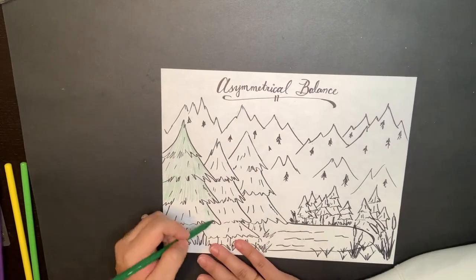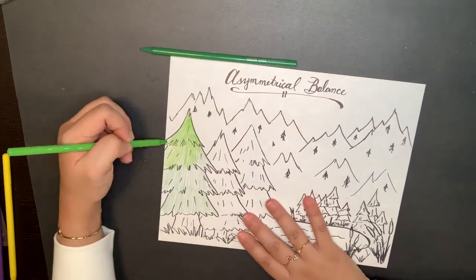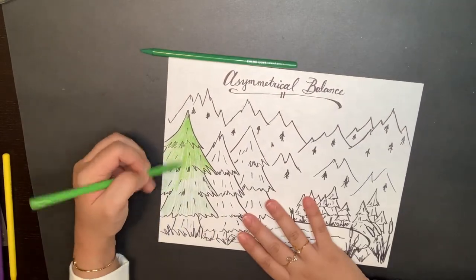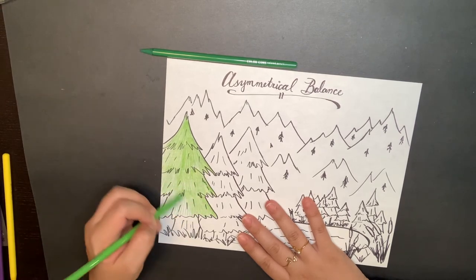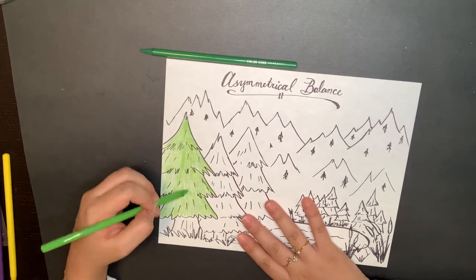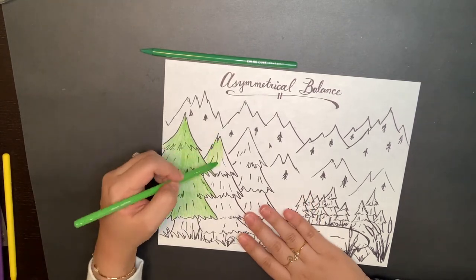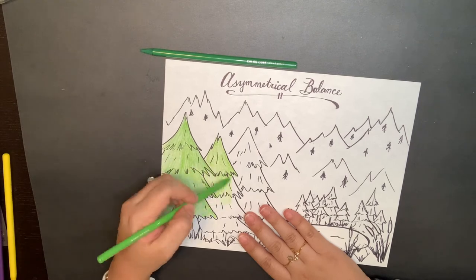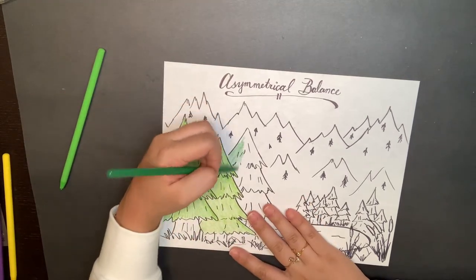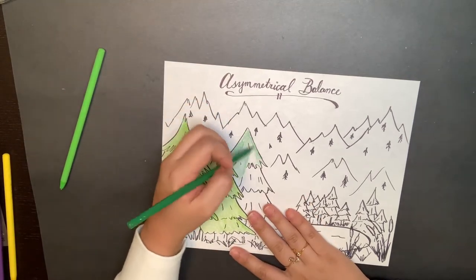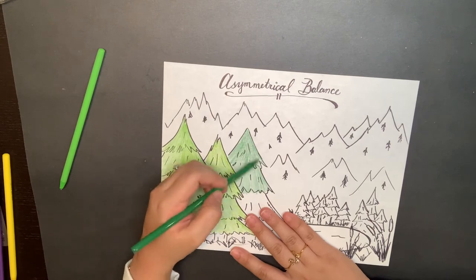If you are drawing a landscape for an asymmetrical image, remember your primary and secondary colors, your complementary colors, your cool tones, and your warm tones. Using your color wheel is always a great tool when adding color to your images.